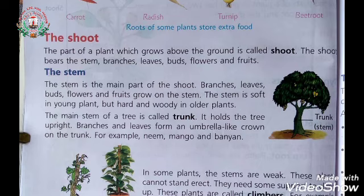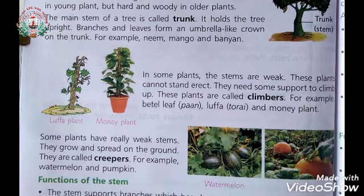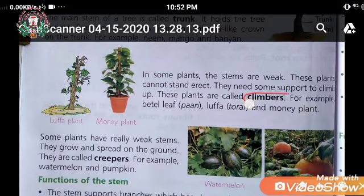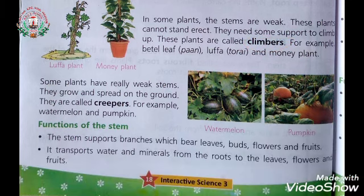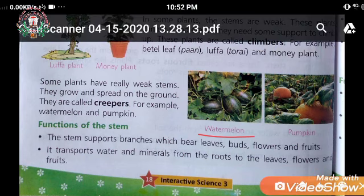Money plant is the best example of a climber. In climbers, the stems are very weak. Watermelon and pumpkin are examples of creepers.